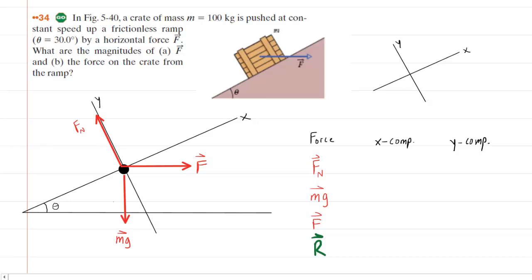In our free body diagram we have shown the gravitational force Mg pointing straight down. We have the normal force pointing straight up, that's the surface of the ramp pushing up on the crate, and that force is always perpendicular to the surface of the ramp. We also have the force given in the question indicated by the letter F that's pointing horizontally to the right.